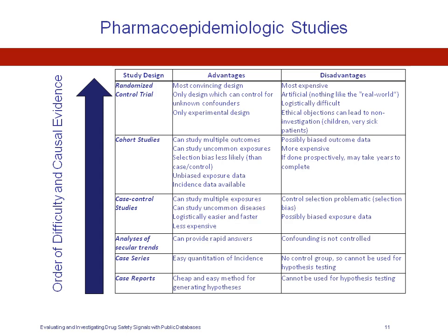At the bottom is the case report, the easiest study design to execute but with the least causal inference capability. As you traverse upward in the table, you gather strength in causal evidence but also increase the difficulty of executing these study designs. At the top is the experimental study design — typically your randomized controlled trials, though you could also have experimental designs that are not controlled.